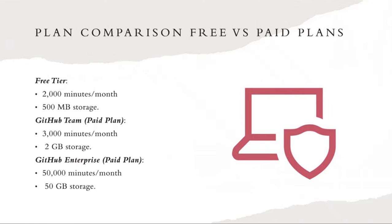GitHub also provides different paid plans. The GitHub Team paid plan has about 3,000 minutes per month with 2 gigabytes of storage. The GitHub Enterprise paid plan provides about 50,000 minutes per month and 50 GB of storage per month. GitHub provides a lot of different payment plans — they're quite unique.